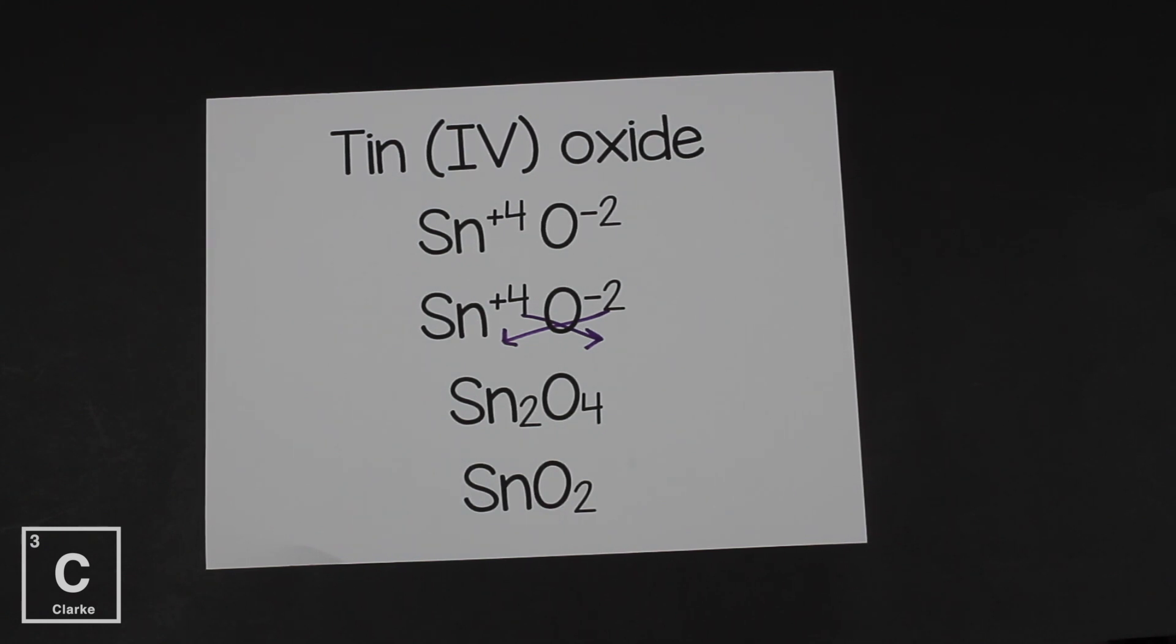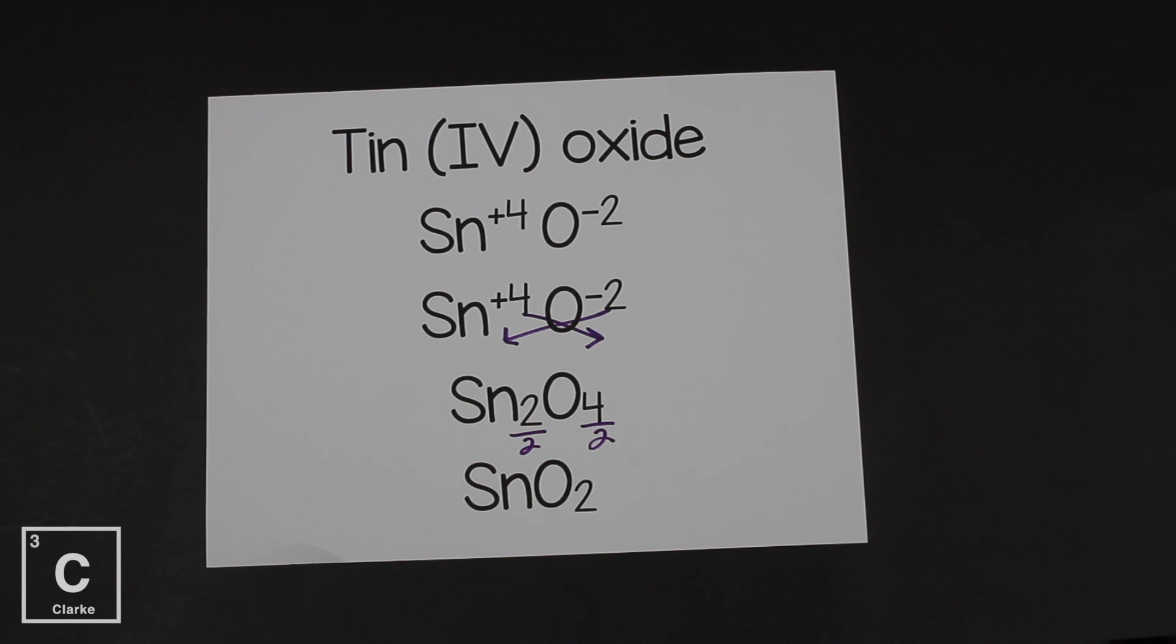When we reduce this down by dividing both numbers by two, we're going to get Sn1, but remember we don't write ones, and O2. All we did was to divide both numbers by two. That gave us Sn1, O2. If you're going to use the shortcut to crisscross down, you always have to reduce down.